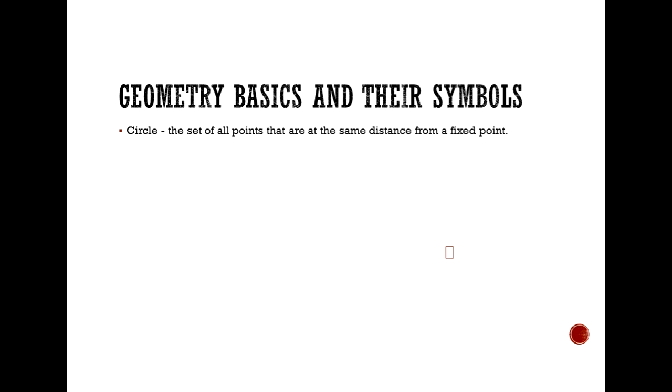Another geometry basic would be the circle. The definition of a circle is a set of all points that are the same distance from a fixed point. Here's an example of a circle.